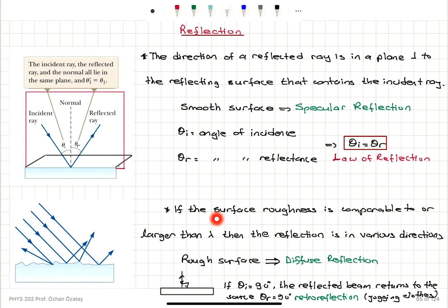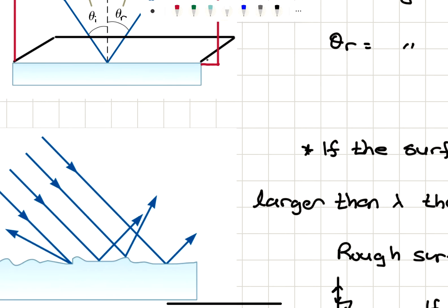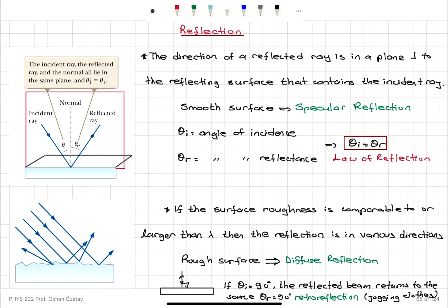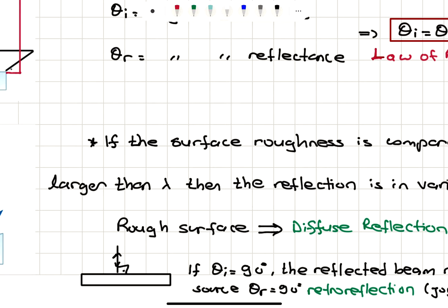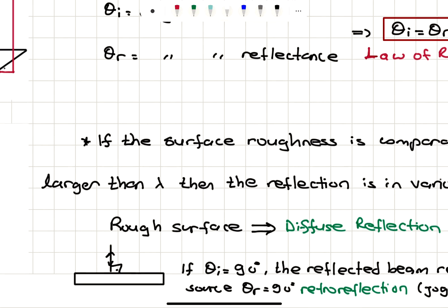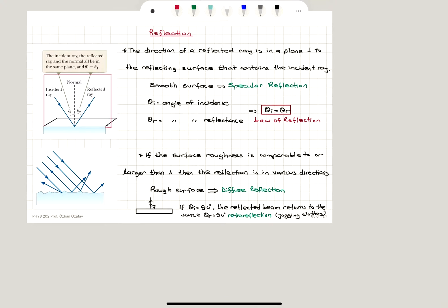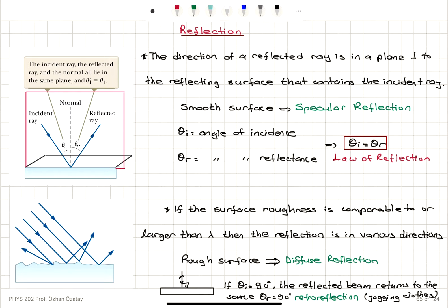If the surface roughness is comparable to or larger than lambda, the reflection is in various directions — that's called diffuse reflection. We have another special case: when the incident ray makes a 90-degree angle with respect to the surface, the reflected ray will just return back to the source. This is called retroreflection, and it finds application in jogging clothes. When you shine light on these clothes, it's very bright — all of the light is reflected back to the source, which is basically for the safety of joggers, especially at night.